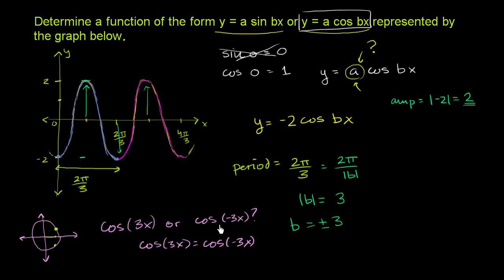cosine of 3x is equal to cosine of negative 3x. So you can actually pick either positive 3 or negative 3, but for simplicity, in this case right over here, I'll just go with the positive 3.